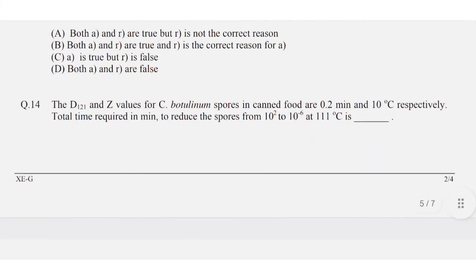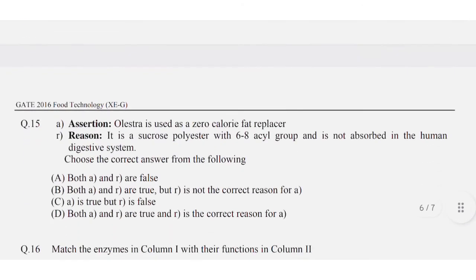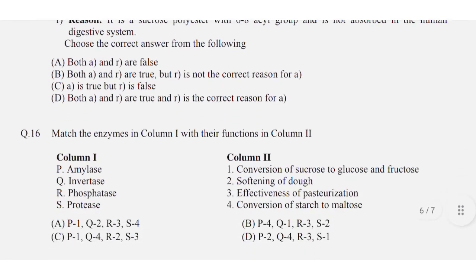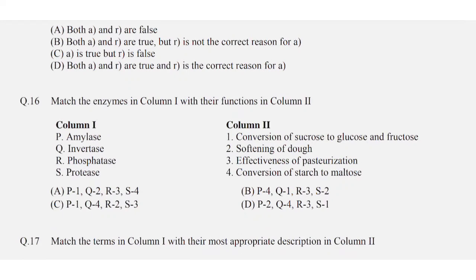Question number fourteen is a numerical answer type — the answer is 15 to 17. Question number fifteen is an assertion and reason type question — the correct option is D. Question number sixteen: match the enzymes in column one with their functions in column two — option B is correct.